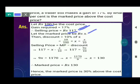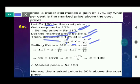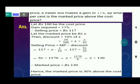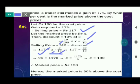Discount = 10% of x = x/10. Using SP = MP minus Discount: 117 = x minus x/10 = 9x/10. So 9x/10 = 117. Transferring 10 to multiply: 9x = 1,170. Therefore x = 1,170 / 9 = 130.